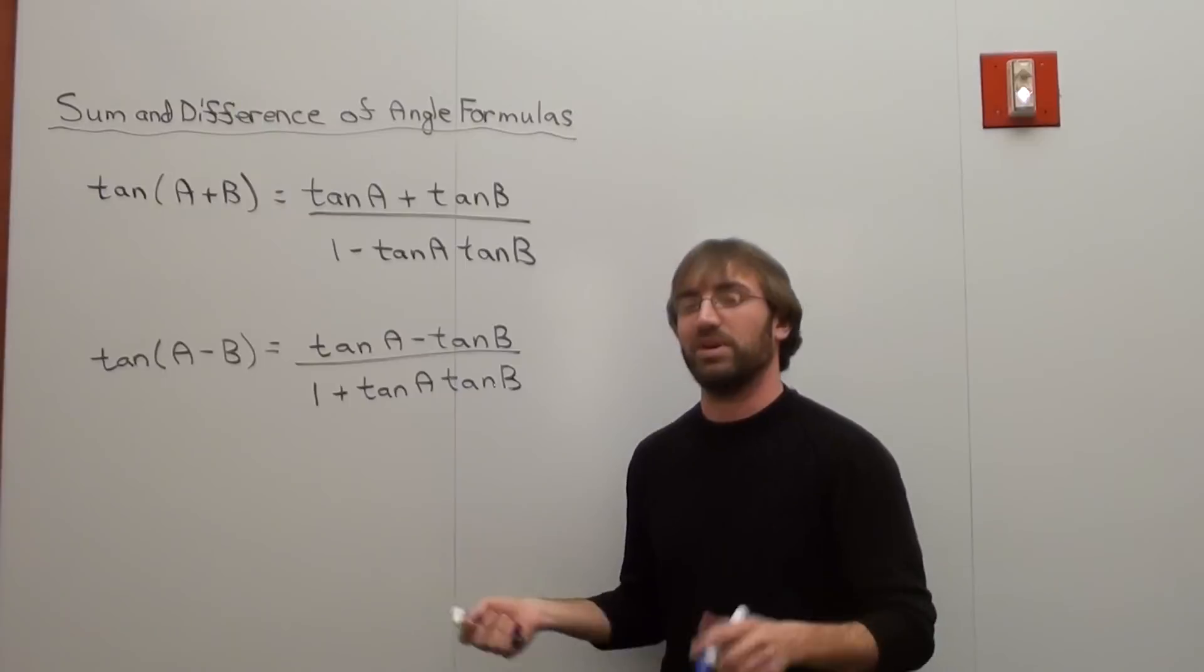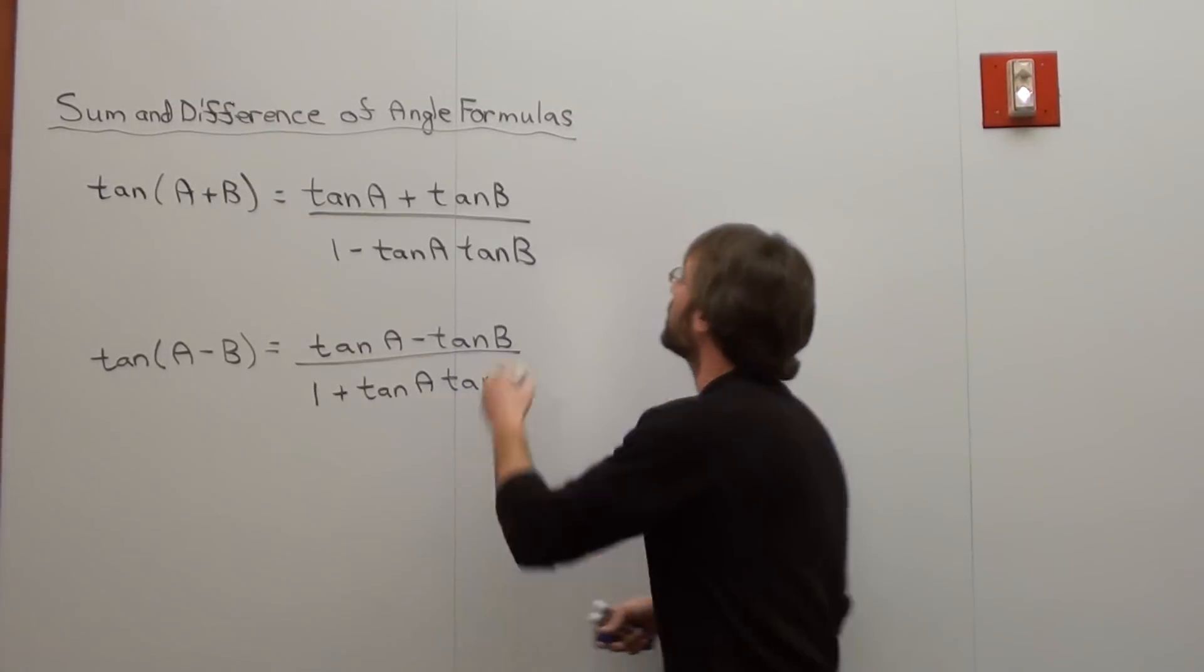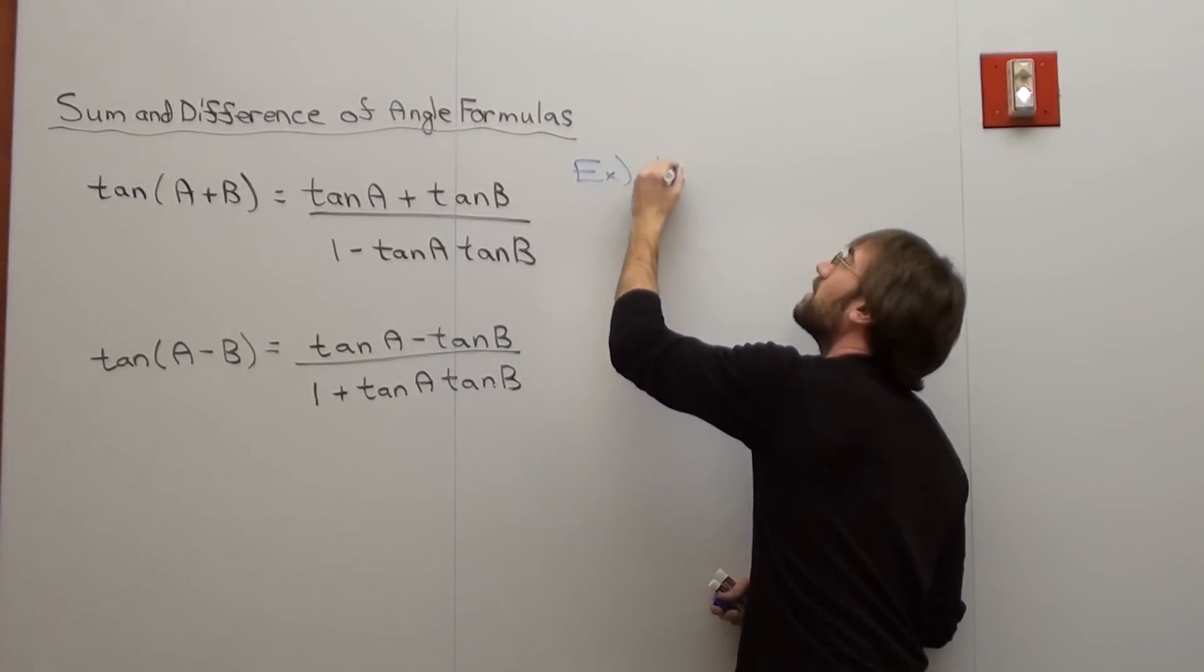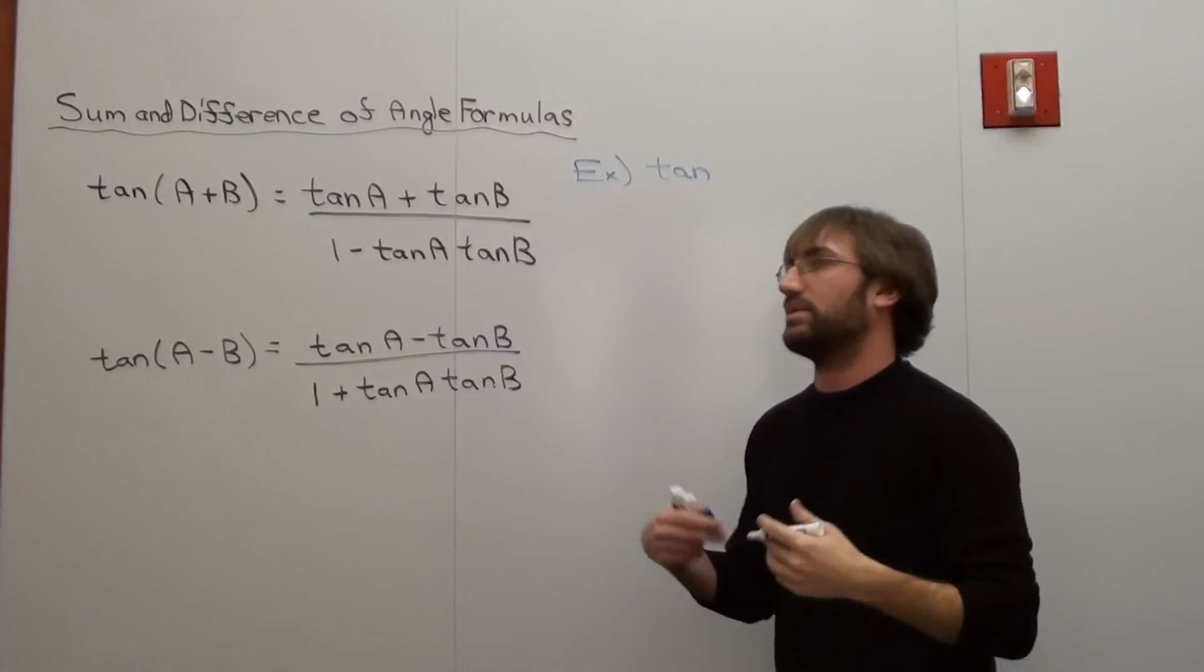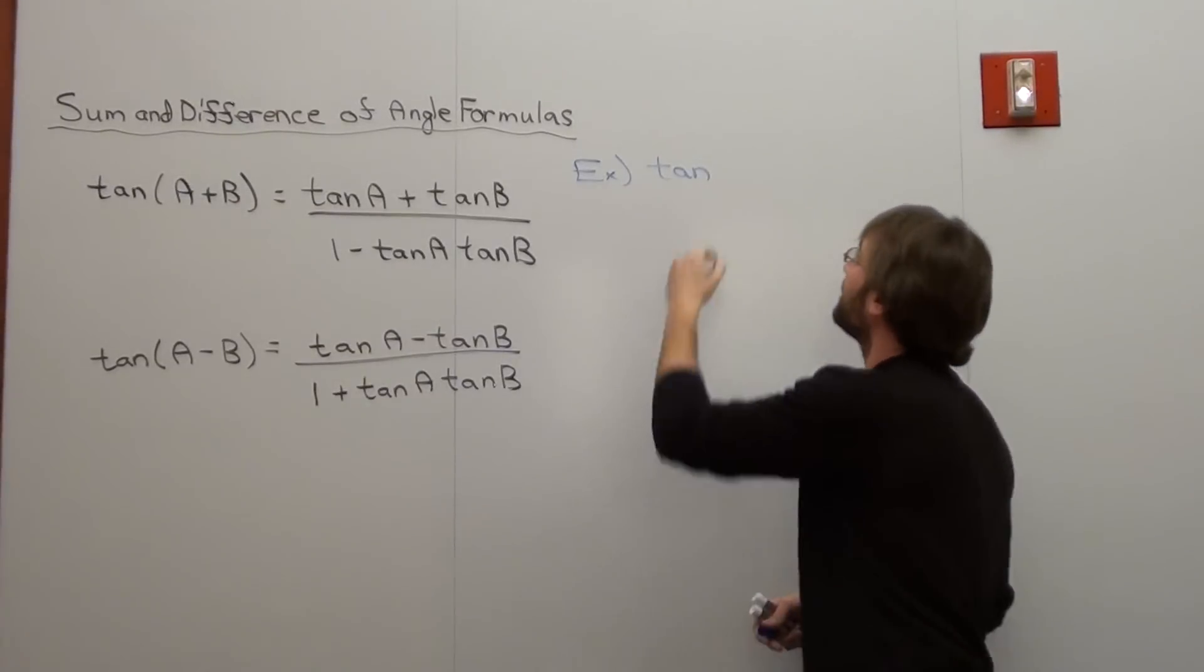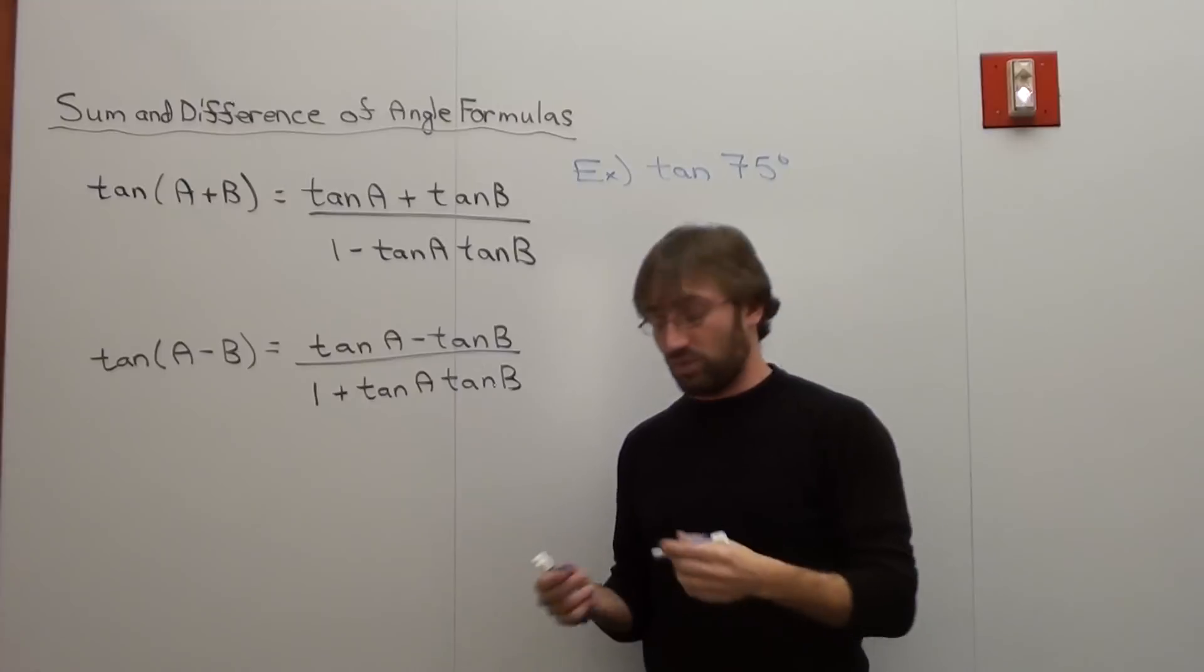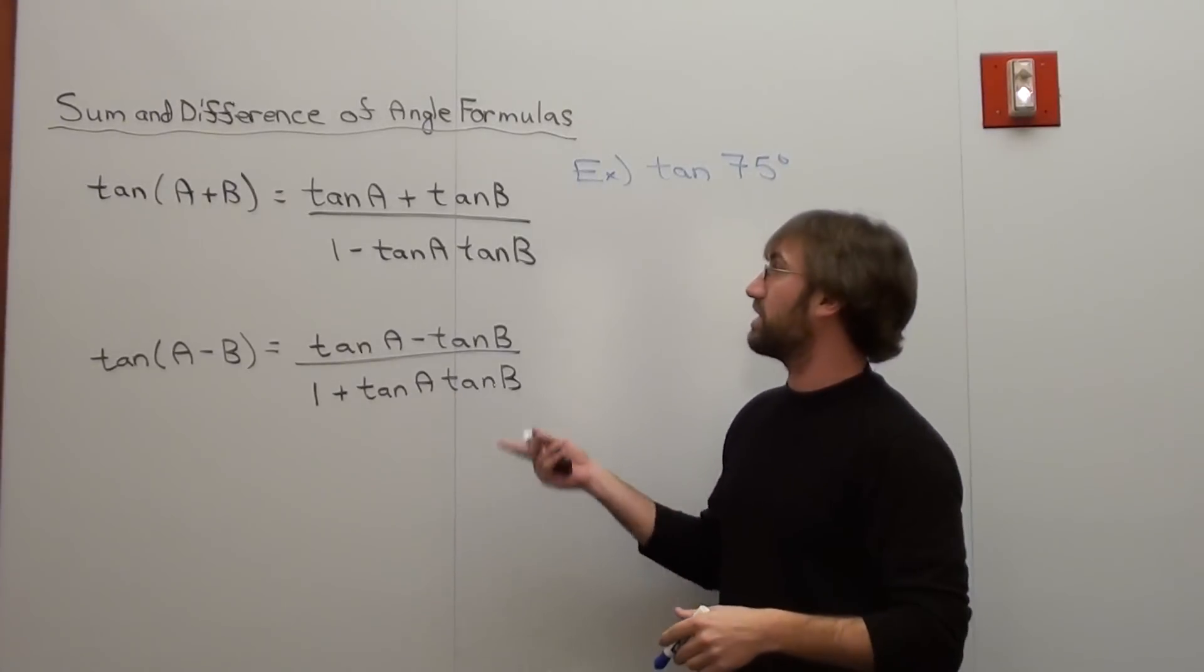I want you to do this: the tangent of 75 degrees. You can also use this in identities as well. It's actually pretty cool to use in identities.